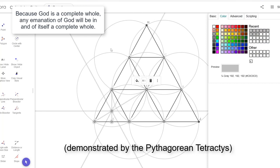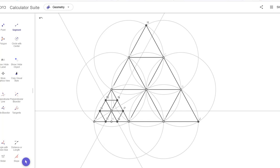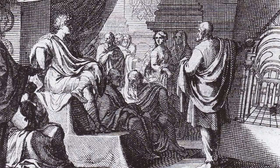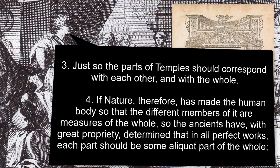That view is as follows: one, God is complete and the complete totality; two, God is not only the creator but the creation as well; three, because God is a complete whole, any emanation of God will be in and of itself a complete whole. This is a macrocosmic view of God where man is a microcosm of God — acting as a sort of homunculus as the mind of God — and we see this idea of a microcosm presented by Vitruvius himself.